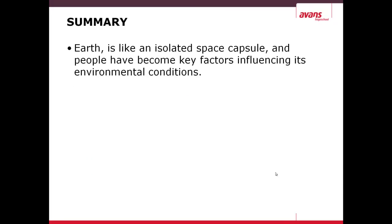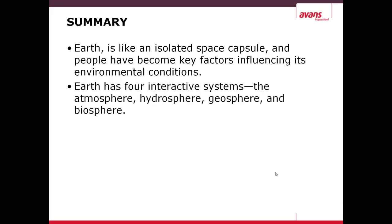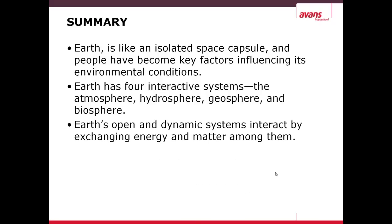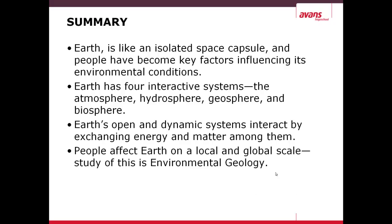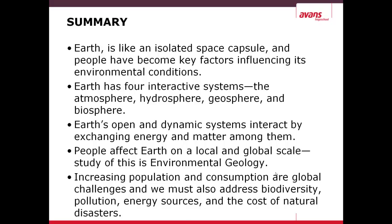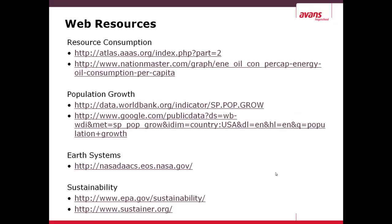In summary, the Earth is like an isolated space capsule — a closed system — and people have become key factors influencing its environmental conditions. Earth has four interactive systems: the atmosphere, hydrosphere, geosphere, and biosphere. Earth's open and dynamic systems interact by exchanging energy and matter among them, as we saw in the carbon cycle. People affect Earth on a local and global scale — this study is called environmental geology or environmental science. Increasing population and consumption are global challenges, and we must also address biodiversity, pollution, energy sources, and the cost of natural disasters. Thank you for your attention and I'll see you in the next module.